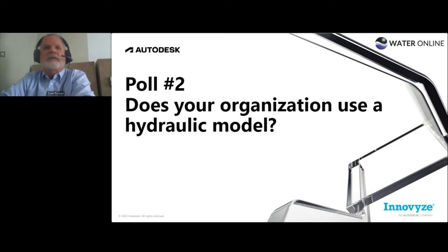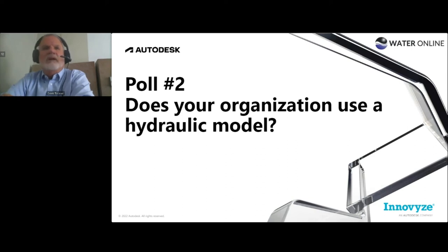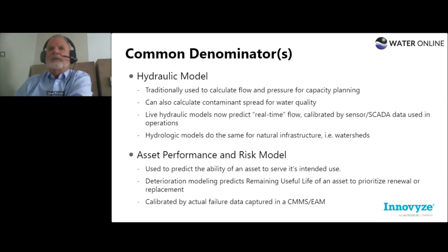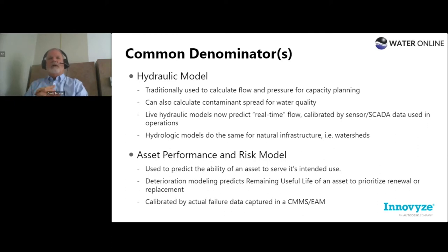The common denominators: the hydraulic model is traditionally used to calculate flow and pressure for capacity planning — and that's what the survey confirmed. But it's not only about quantity — we use hydraulic models to calculate contaminant spread. For example, classically for chlorine disinfection byproducts and stagnant water — that's why we do hydrant flushing. There are ways to understand contaminant spread and the quality piece with hydraulic modeling.